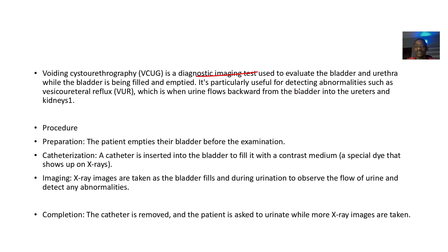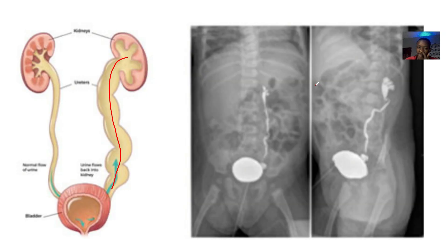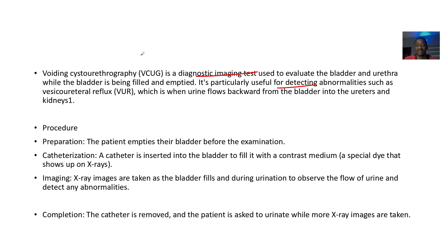The VCUG is particularly used for detecting abnormalities such as vesicoureteral reflux. Vesicoureteral reflux is when urine flows backward — from the bladder back into the ureters and into the kidneys — the opposite direction of normal urine flow.